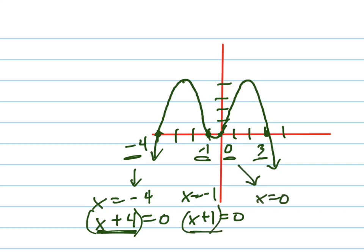If x equals zero, there's another factor. And if x equals 3, x minus 3 equals zero. So there are your four factors. Each factor relates to a zero.